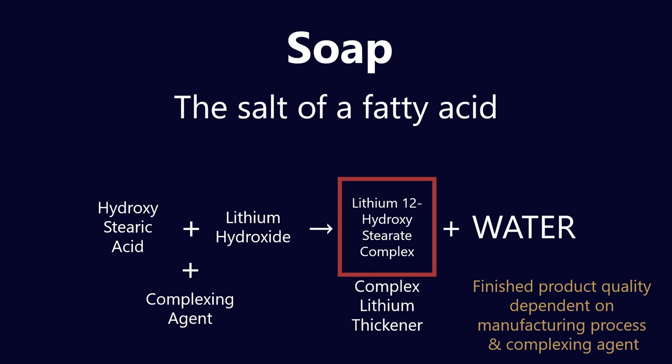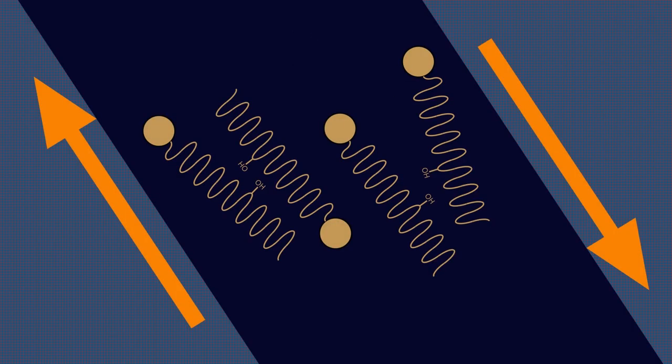Usually they're a diacid - a carbon chain with two acid functional groups. However, there are variants on that, and some of them are proprietary technologies to different lubricant manufacturers, and that can really affect the bulk properties of the complex lithium thickener.